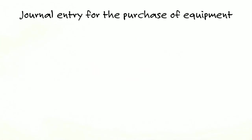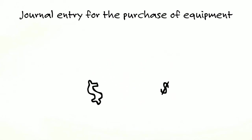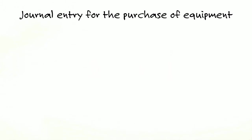When you buy equipment, it's not just your invoice or purchase price. When you acquire equipment, you also capitalize any taxes, installation, testing, freight, trial run — anything to get that equipment ready for its intended use. Your journal entry: debit equipment, credit cash or payable. And remember, that's going to be an investing outflow, just like buying land.